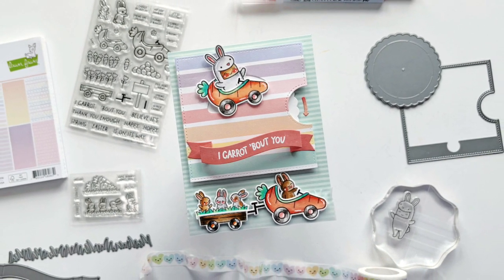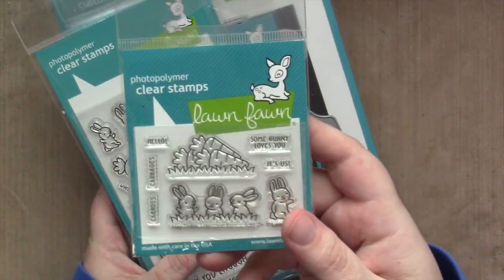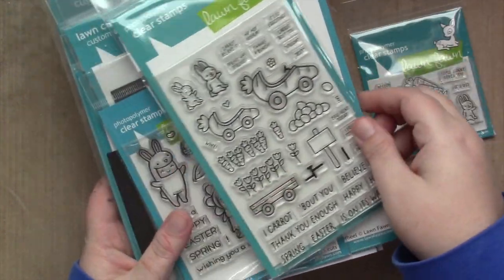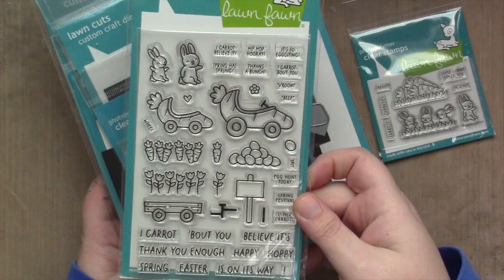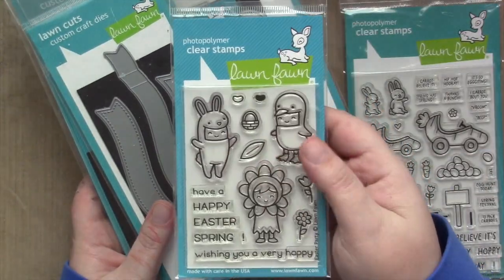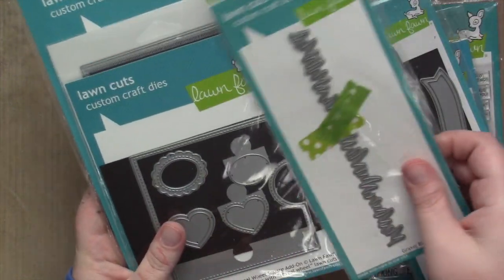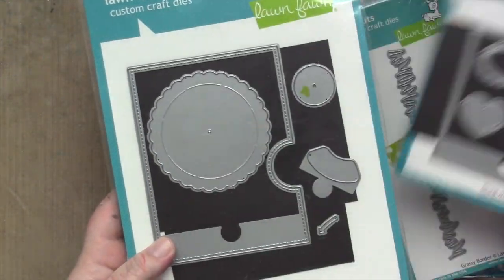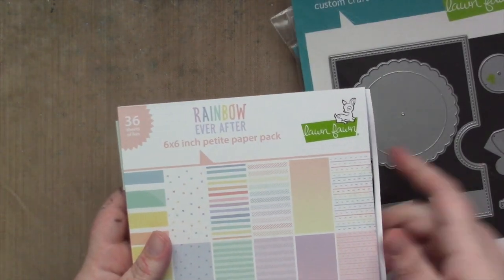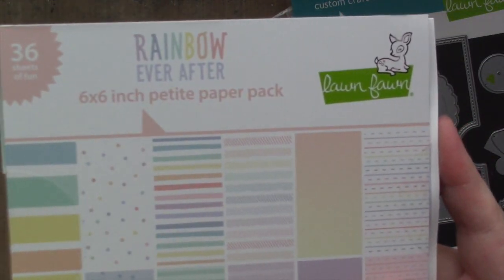Hi everyone, it's Sam and I'm back with another video for Lawn Fawn. Today I am using the new Carrot Baobao Chu Stamps and Dies, Easter Party Stamps and Dies, the Fancy Wavy Banners and Grassy Border Dies, the Reveal Wheel Square Add-on, the Reveal Wheel Die, and the new Rainbow Ever After 6x6 Paper Pad.